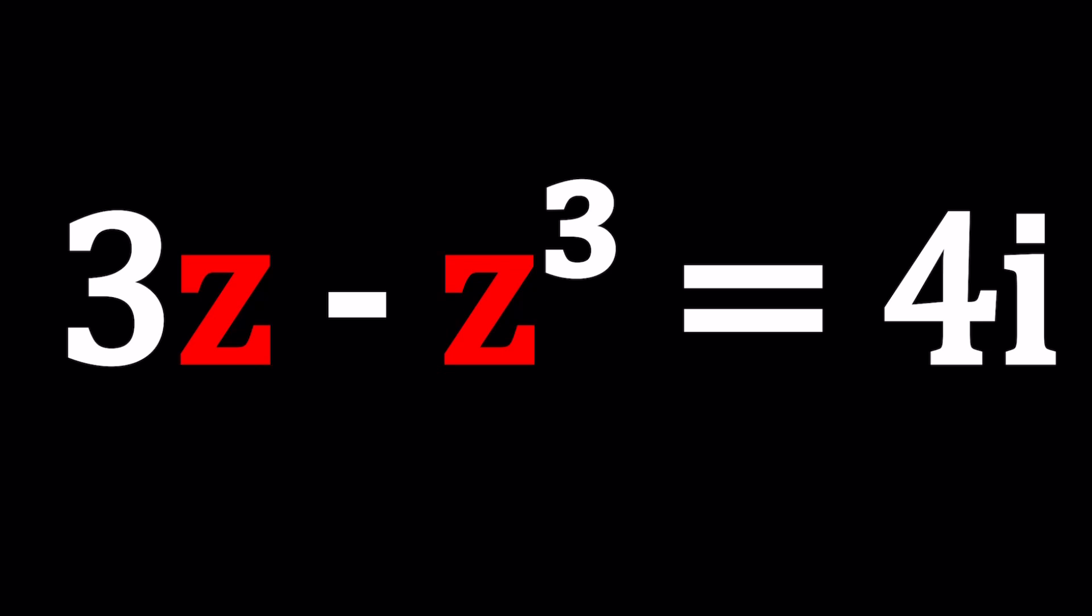You might have guessed one of the solutions at this point. Don't tell anyone, keep it a secret until we reveal the process. So we have 3z minus z cubed equals 4i and we're going to be solving for z values. We expect to get three solutions because this is cubic. The fundamental theorem of algebra says you should get three complex solutions.